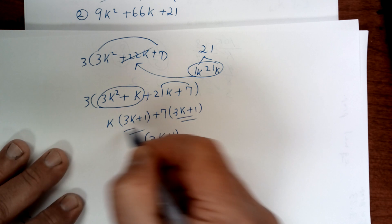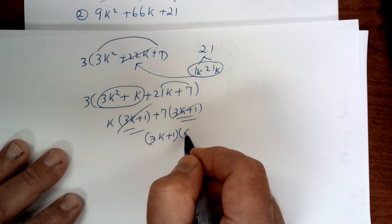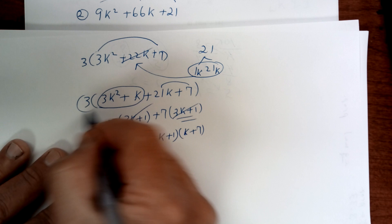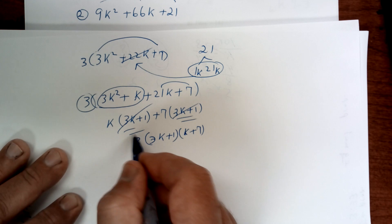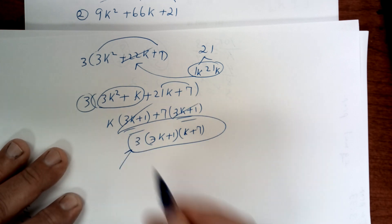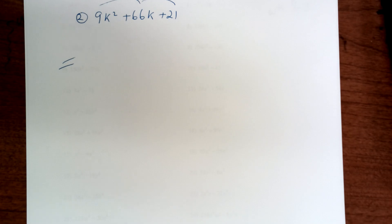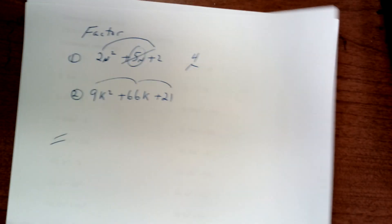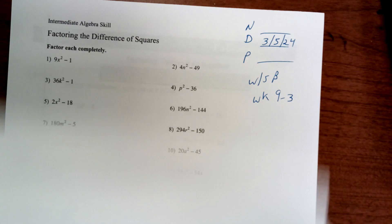And you're left with k + 7, but you can't forget that 3 on the outside. If you forget that 3 right there, it would be wrong. Remember, factor first. Today we're going to do something called difference of two squares. Copy down number one.